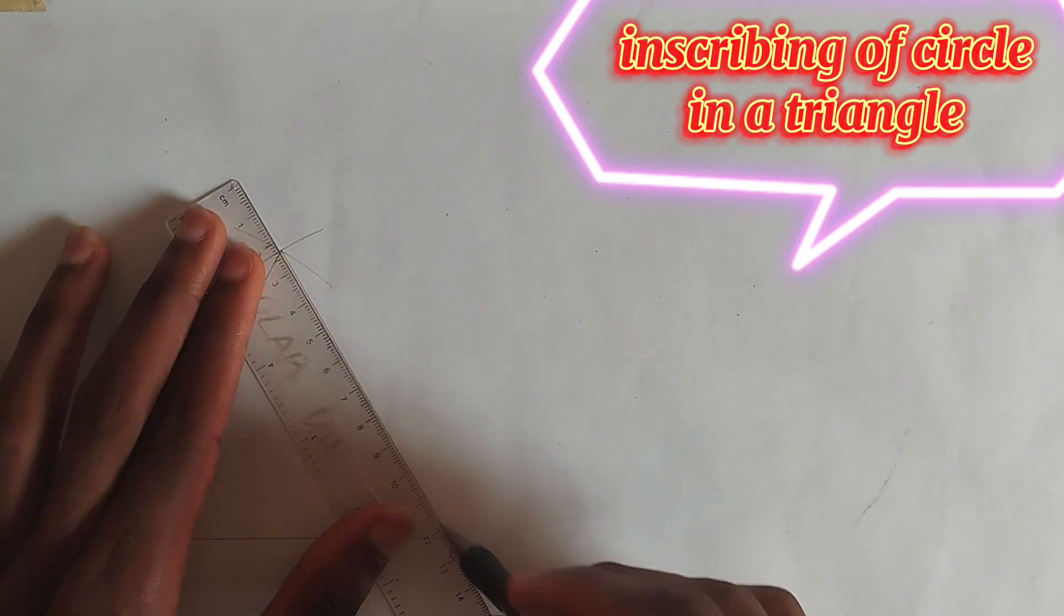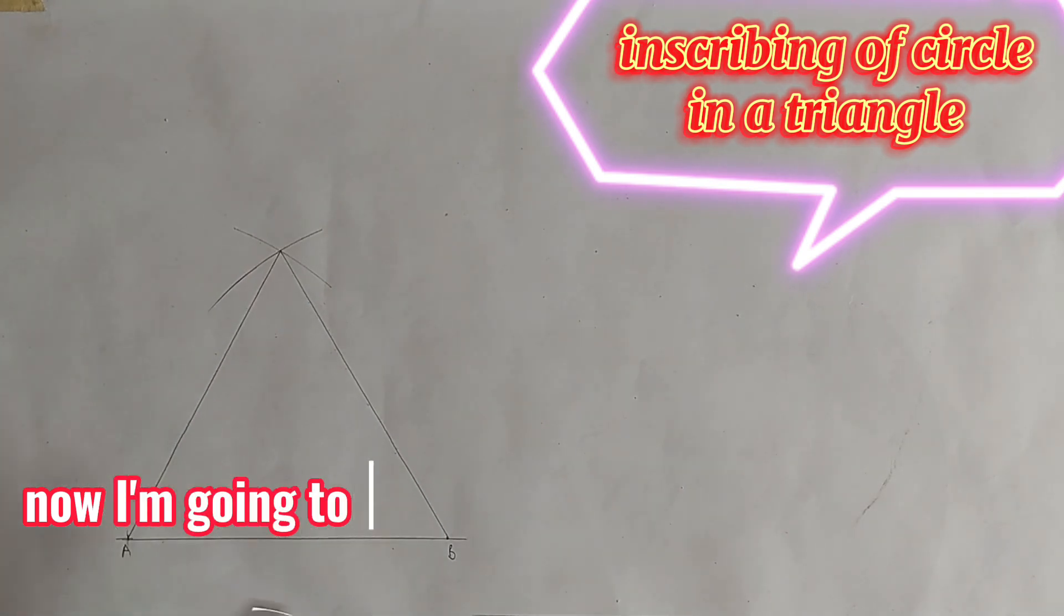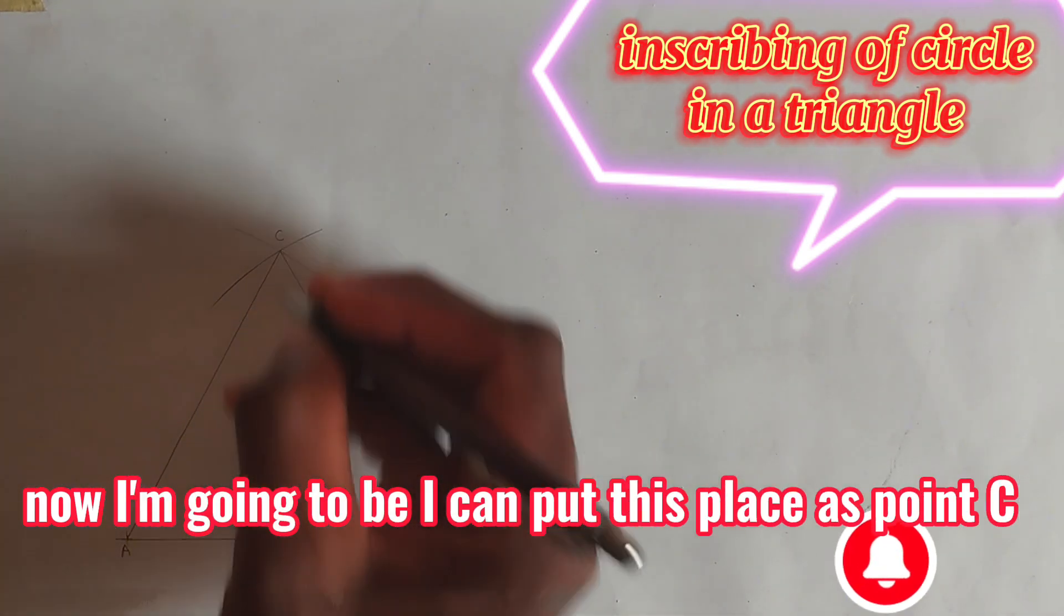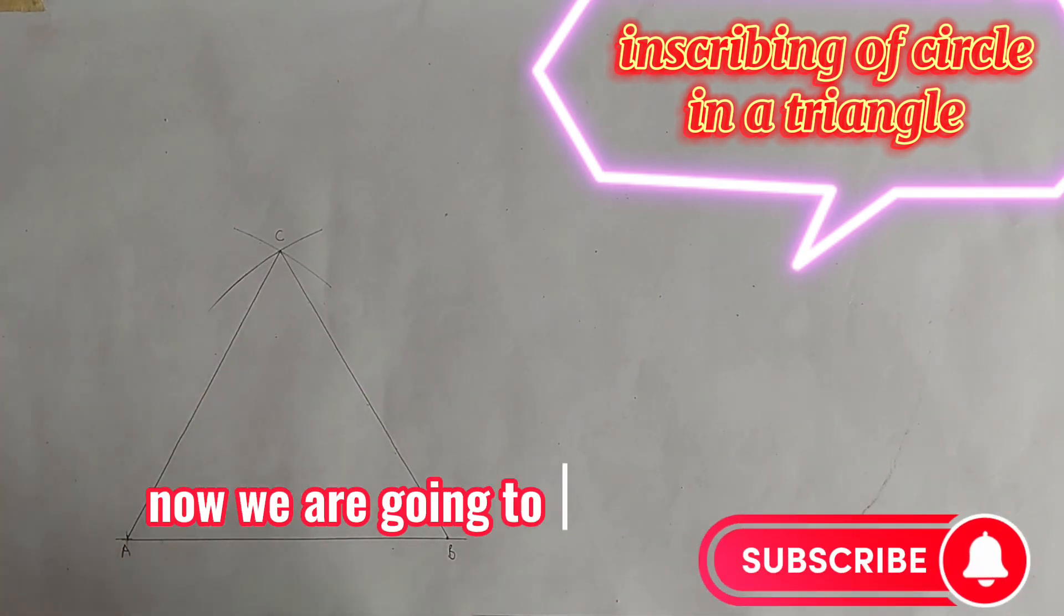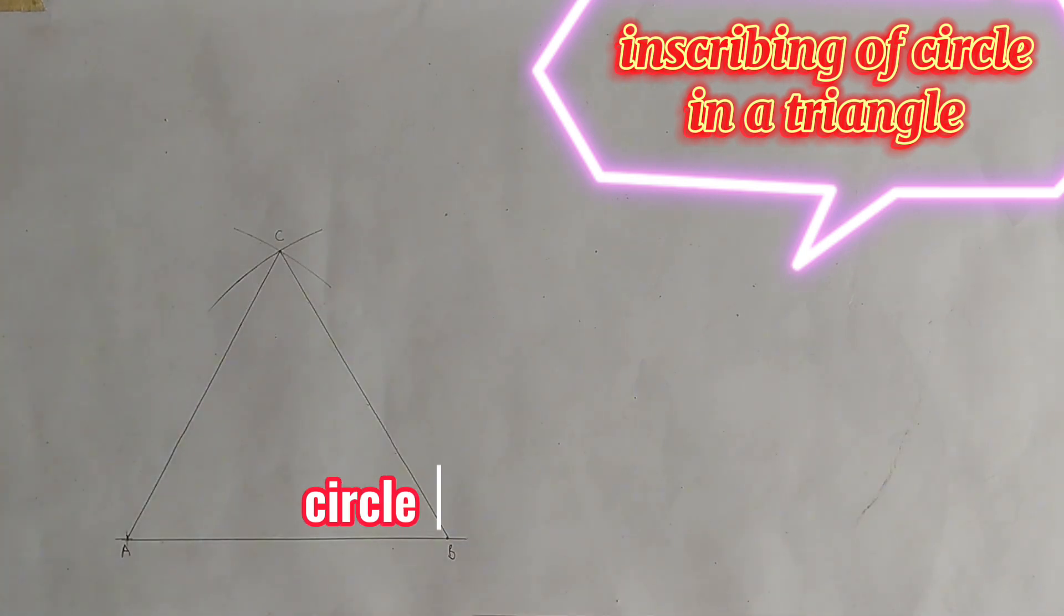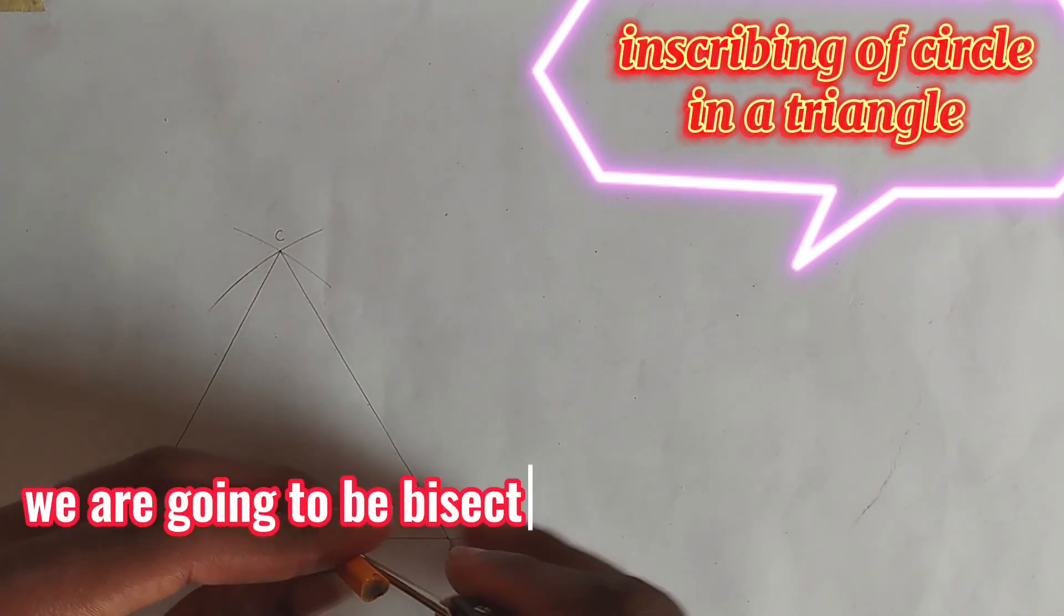And join this also. I can put this place as point C. Now we are going to be inscribing our circle in this triangle. First of all, we are going to be bisecting this particular angle.